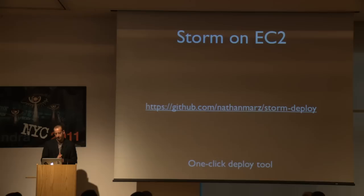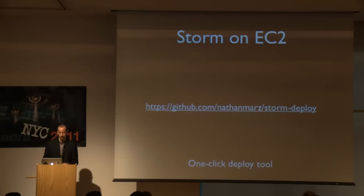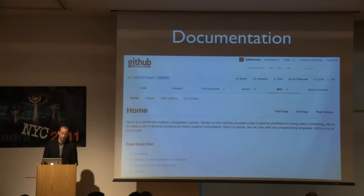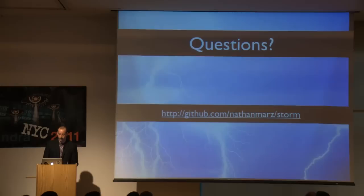A few more things about Storm. If you're on EC2, there's a companion project called Storm Deploy — a one-click deploy tool that gets a full Storm cluster up and running in just a few minutes, and even sets up Ganglia for tracking resource usage. All the code shown today is open source in the Storm Starter project, which has example topologies to get you started quickly. Storm also has very extensive documentation — over 16,000 words — and I've gotten a lot of good feedback about it from the community.